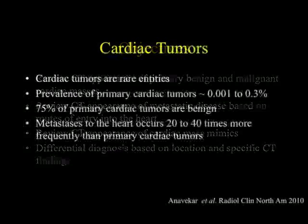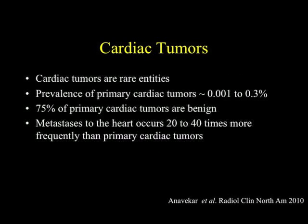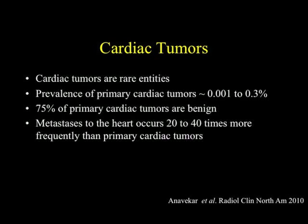We all know cardiac tumors are rare. The prevalence is somewhere between 0.001 to 0.3 percent. The majority, about 75 percent of primary cardiac tumors, are benign. Metastasis to the heart occur about 20 to 40 times more frequently than primary cardiac tumors. A lot of this in terms of numbers is based on pathology prior to fast CT or MR — you really didn't pick up these metastases.